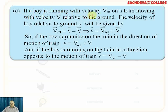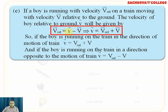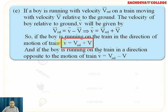If a boy is running with relative velocity v_relative on a train moving with velocity v, the frame of reference is the moving train. The velocity of the boy relative to the ground is given by v_relative = v minus v_train, since the boy is moving in the direction of the train with respect to ground. Therefore, v = v_relative plus v_train. If moving in opposite directions, v = v_relative minus v_train.